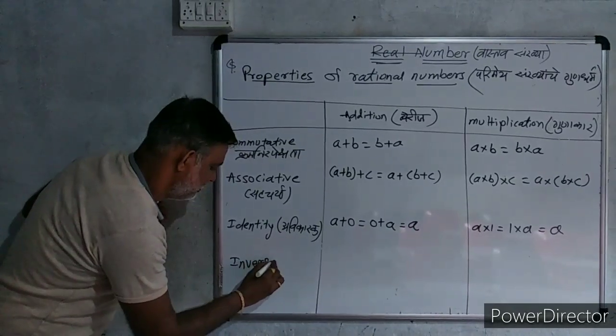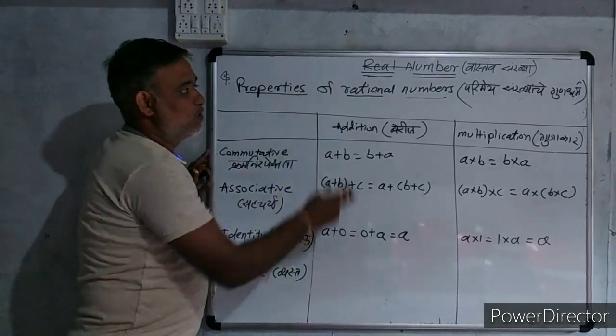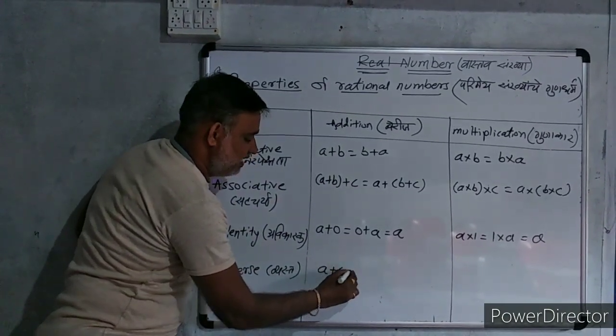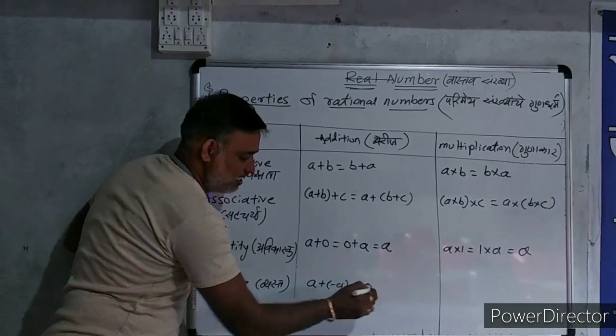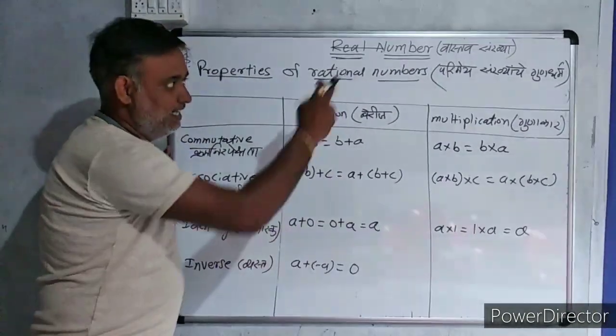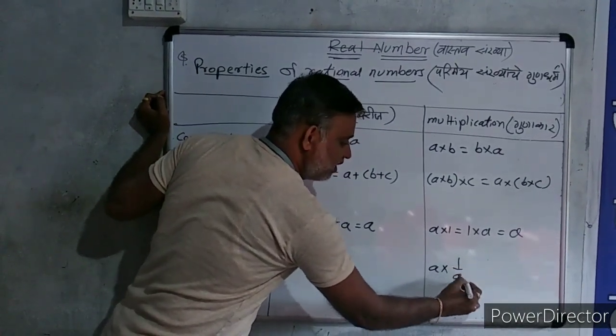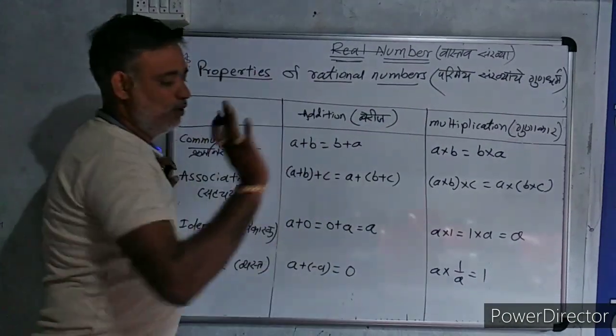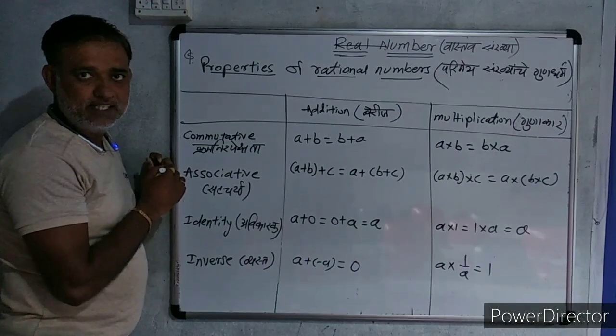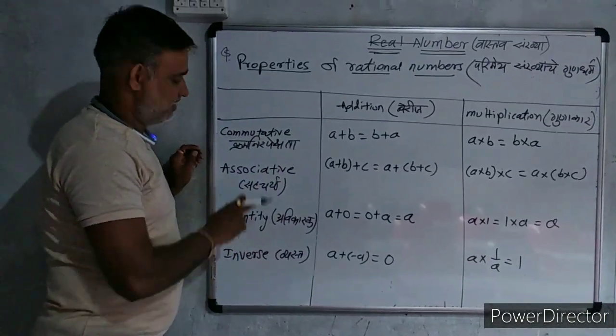And last, inverse. In case of addition, suppose A, then what is inverse of A? That is minus A. So, their addition is 0. Sign is different. And in case of multiplication, suppose we take A. What is inverse of A? That is 1 upon A. A times 1/A cancel is equal to 1. These are the four properties of rational numbers. Commutative, associative, identity, inverse.